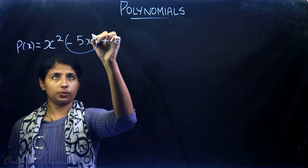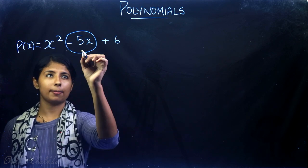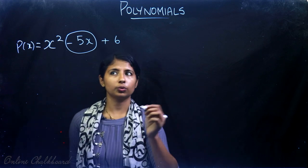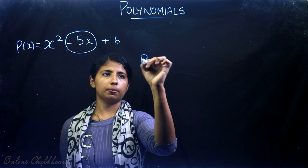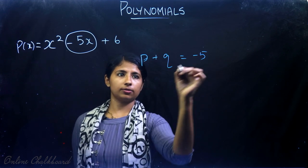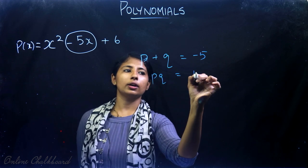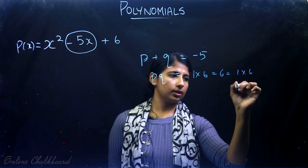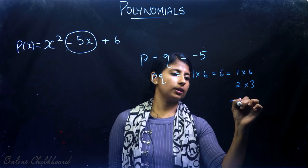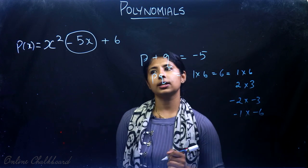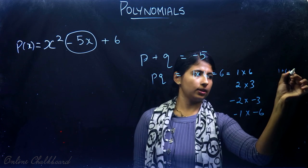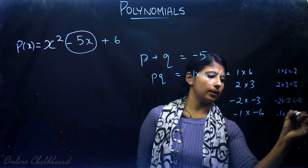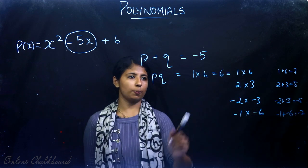We need to split the middle term such that when we add the two numbers we get the sum as -5, and the product of those two numbers is 6 times the coefficient of x², which is 1 × 6 = 6. So we must find two numbers p and q such that p + q = -5 and p × q = 6. The factors of 6 can be: 1×6, 2×3, -2×-3, or -1×-6. Checking sums: 1+6=7, 2+3=5, -2+(-3)=-5, -1+(-6)=-7.